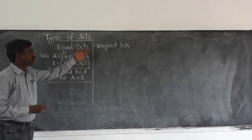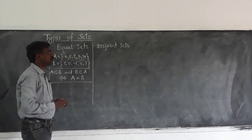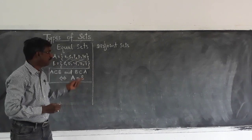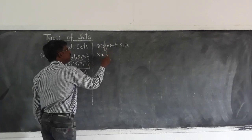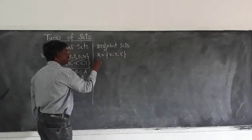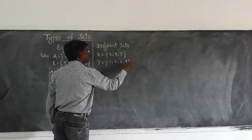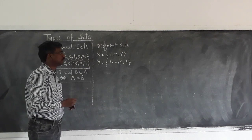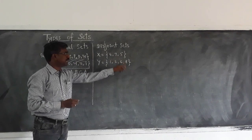Now observe a special concept: disjoint sets. By name there is no joint — disjoint. Observe one example: X equal to the set {4, 7, 5} and Y equal to the set {1, 2, 6, 8}.